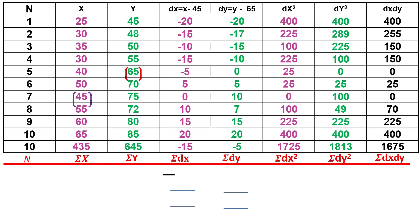For the dx values, subtracting the assumed mean (45) from each x: 25 minus 45 is minus 20; 30 minus 45 is minus 15; 35 minus 45 is minus 10; 40 minus 45 is minus 5; 50 minus 45 is plus 5; 45 minus 45 is 0; 55 minus 45 is 10; 60 minus 45 is 15; 65 minus 45 is 20.